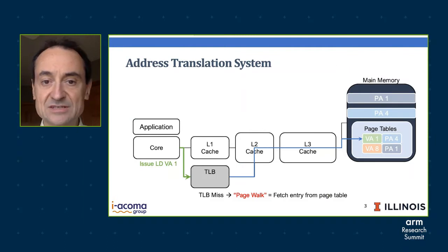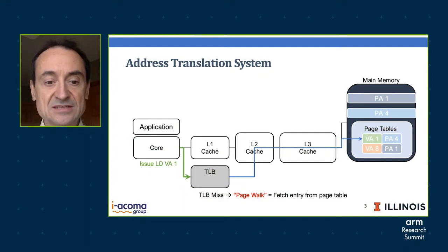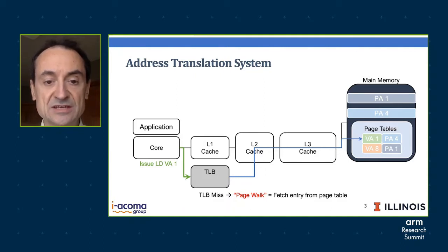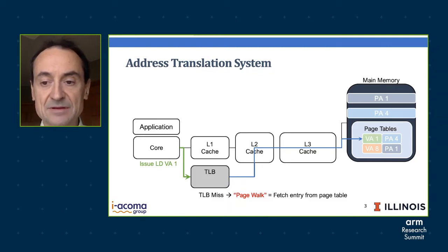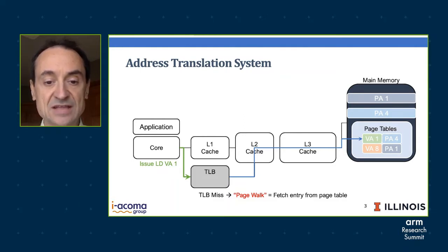Let's take a look at how the address translation system works in current systems. When a core issues a load to a virtual address, the access goes to a TLB. The TLB is supposed to have the translation from a virtual page number to a physical page number. It's possible that the TLB misses. In this case, the hardware initiates what's called the page walk, which is to fetch an entry from the page table. It will go to memory, grab the translation, bring it back into the TLB, and then the request from the processor is reissued, this time hitting in the TLB, producing the actual physical address, and that goes to memory.